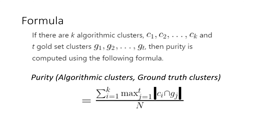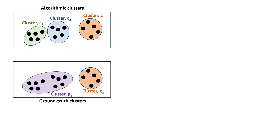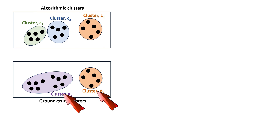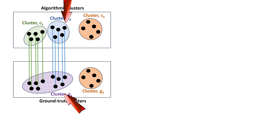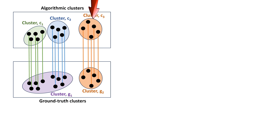One critical item to note: a purity of 1.0 means that the algorithmic clusters are pure, but that does not necessarily mean each algorithmic cluster has a unique match in the ground truth. For example, with 15 points and three algorithmic clusters C1, C2, C3 against two ground truth clusters G1 and G2 — C1's five points are entirely in G1, C2's five points are all in G1, and C3's five points are all in G2. Since C1, C2, and C3 are all fully pure, the purity score is 1.0 even though the algorithm found three clusters and the ground truth has only two.